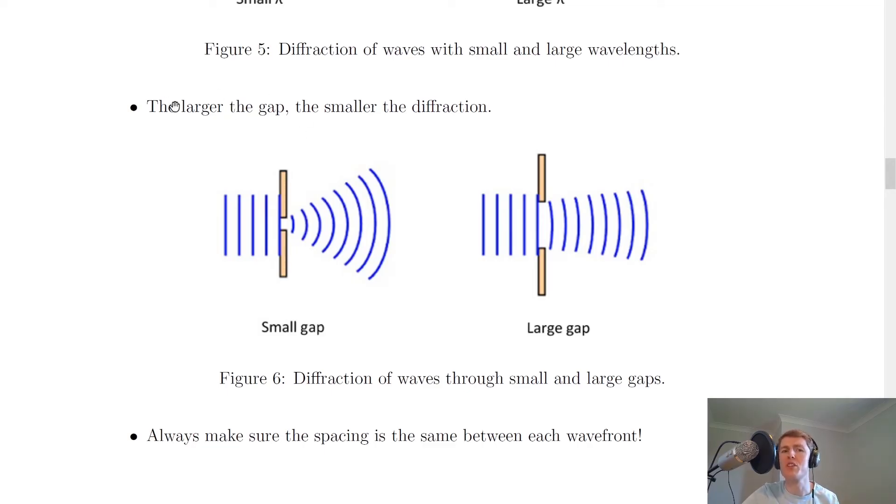So the opposite is also true. So the smaller the gap, the larger the diffraction. So this is just a picture of what I've just shown you. You'll see the waves coming in for the small gap and much more diffraction, much more bending. Whereas for the large gap, you'll see the waves not bending as much.